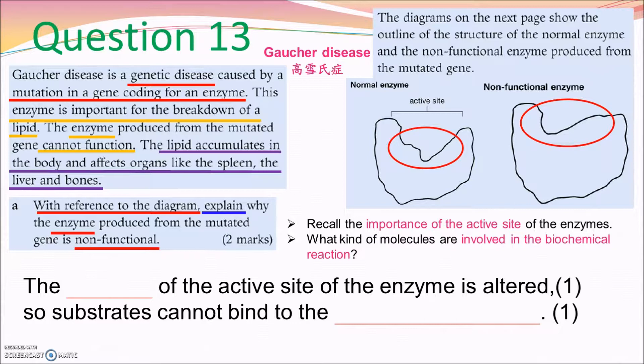For question 13, it's talking about the genetic disease called Gaucher disease. It's talking about the mutation and the enzyme activity. Therefore, remember to do revision across chapters. The question is talking about the non-functional enzyme cannot help us to break down lipids. Therefore, the lipids will accumulate in our body and affect our health. So, why are the enzymes non-functional? According to the diagram, you can easily get the idea. Take a look at the active site and recall the importance of the active site in the enzyme.